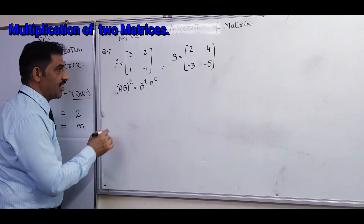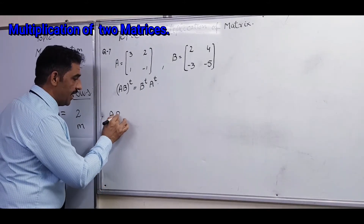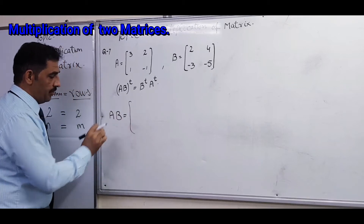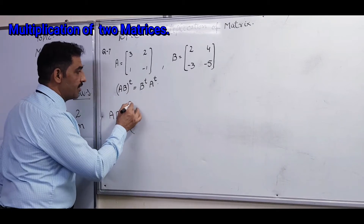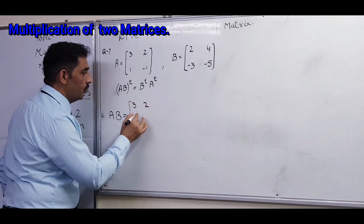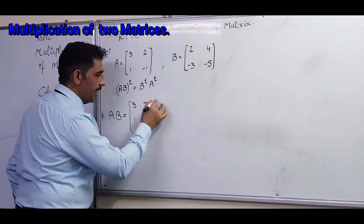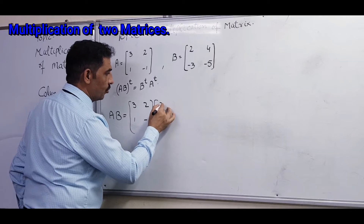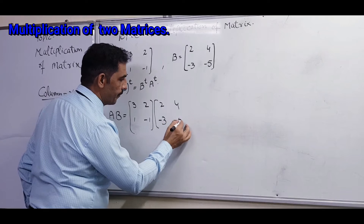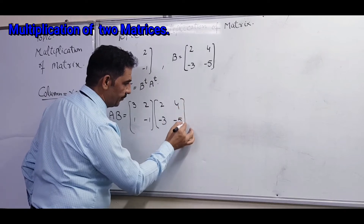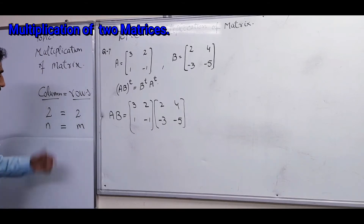Now we start the multiplication process. First, we write A times B. According to our statement, matrix A is: 3, 2, 1, minus 1 — and we multiply by matrix B: 2, 4, minus 3, and minus 5.